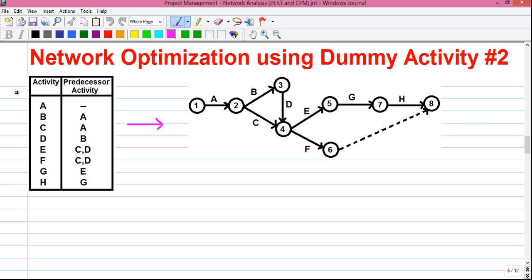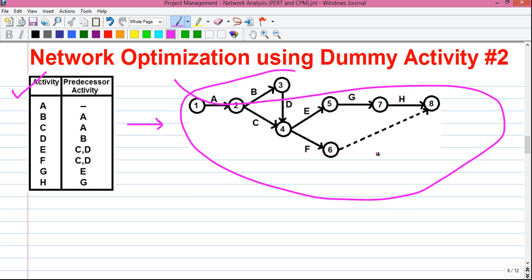Sound confusing? Not at all. I will explain it. So let me start. First, you are given an activity table from which we have to draw the network diagram. First, don't look at the network, I will tell you how to draw it.